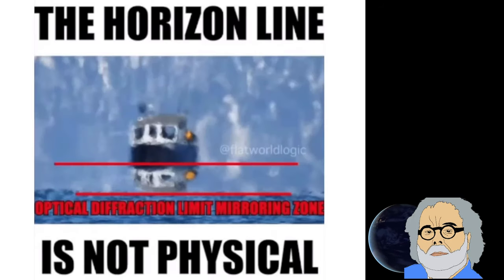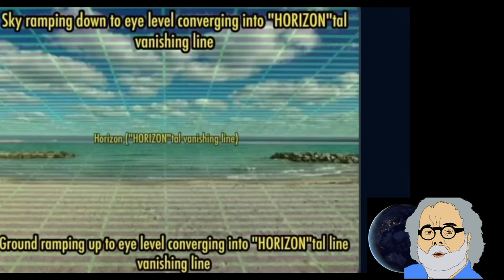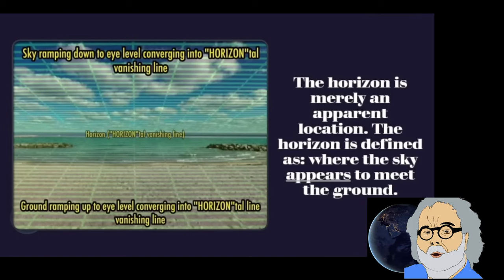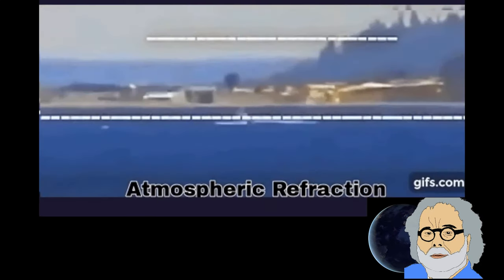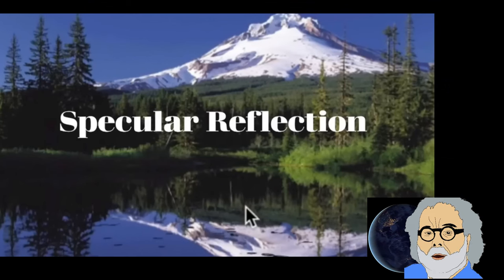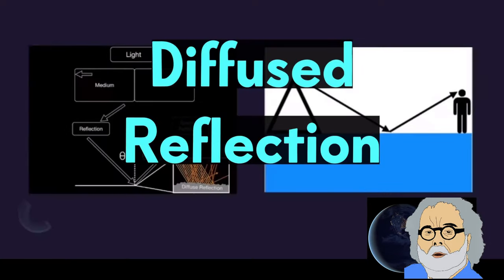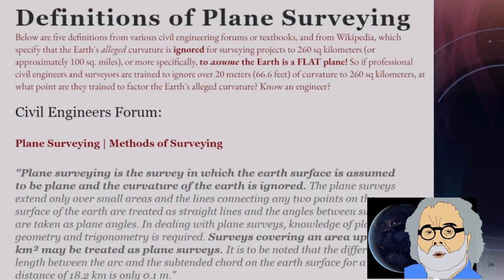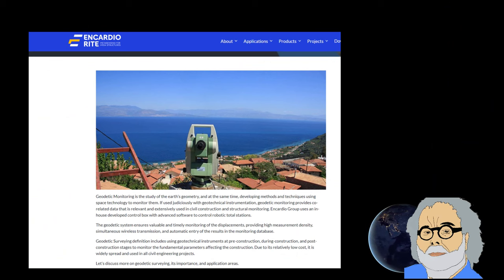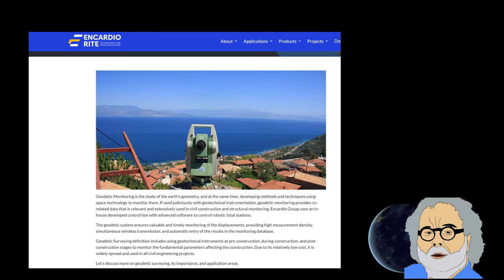The horizon is not physical, the horizon is converging into the horizontal vanishing line, the horizon is moving around, we see an apparent place, long hallways — showing examples of extreme refraction. He talks about when the surface is not flat you can't have specular refractions, deliberately confusing specular reflection with diffuse refraction. He thinks that because plane surveyors assume that the earth is flat, the earth must be flat — ignoring geodetic surveying, a field that does not assume the earth to be flat but has measured that the earth is an oblate spheroid.